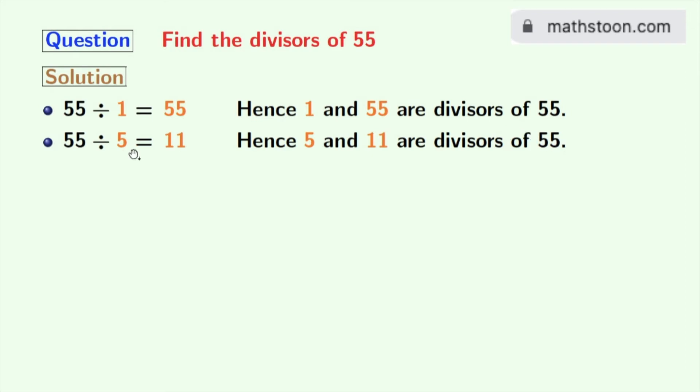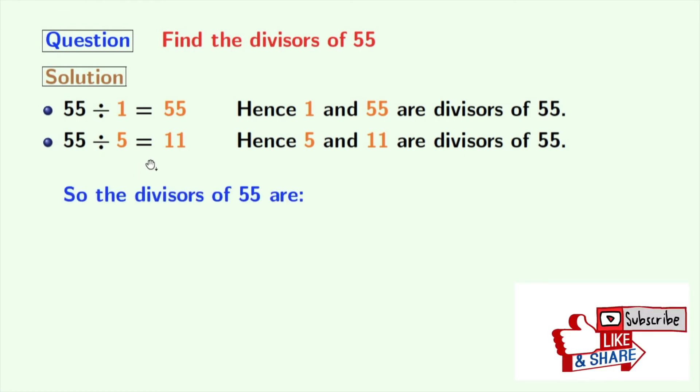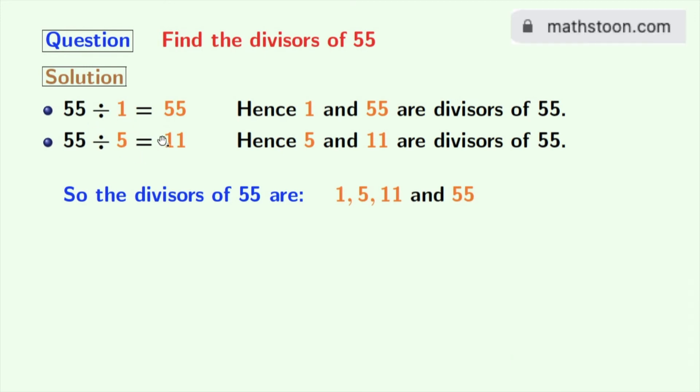Now look that there is no number between 5 and 11 which can divide 55. So we will stop right now. Now we have all the divisors of 55 which are in orange colors. These numbers are 1, 5, 11 and 55. So the total number of divisors of 55 is 4.